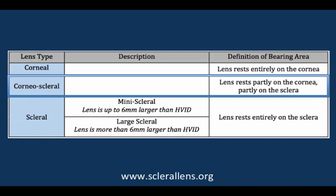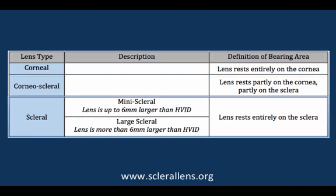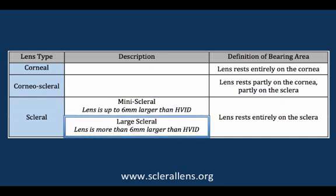Corneoscleral lenses rest partly on the cornea and partly on the sclera. Scleral lenses rest entirely on the sclera. Mini scleral lenses are up to 6mm greater than the horizontal visible iris diameter. Large scleral lenses are more than 6mm larger than the horizontal visible iris diameter.